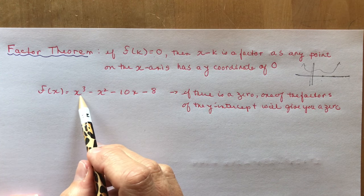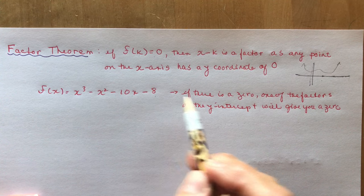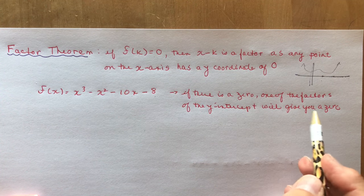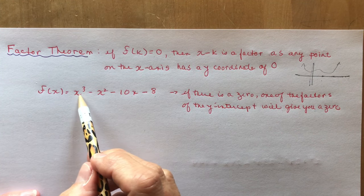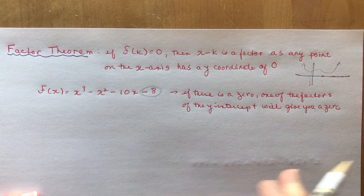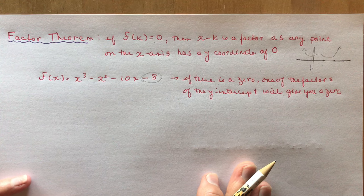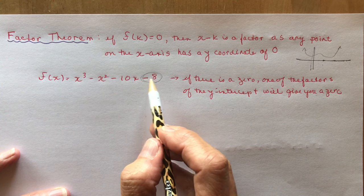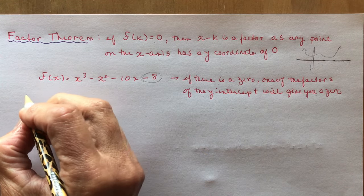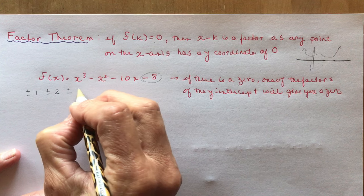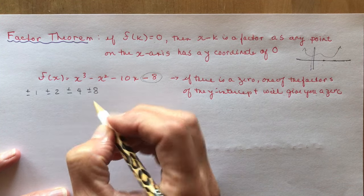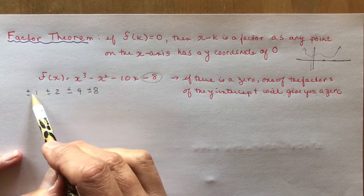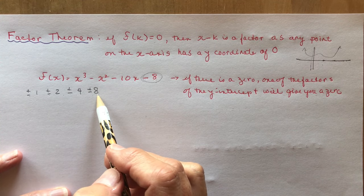So now we have this cubic function: f(x) equals x cubed minus x squared minus 10x minus 8. If there is a zero, one of the factors of the y-intercept will give you a zero. The y-intercept happens when x equals 0. So the first thing I want to do is state all the factors of negative 8: plus or minus 1, plus or minus 2, plus or minus 4, plus or minus 8. These are the numbers I'm going to test using the factor theorem to see which could possibly be a zero.